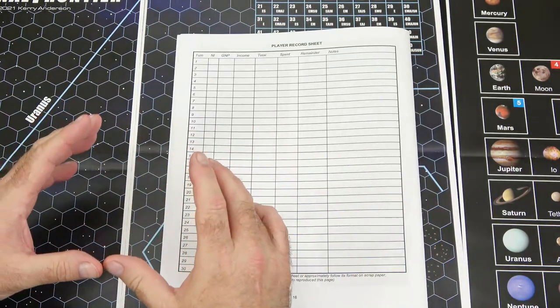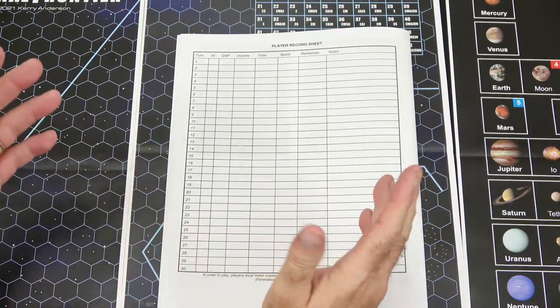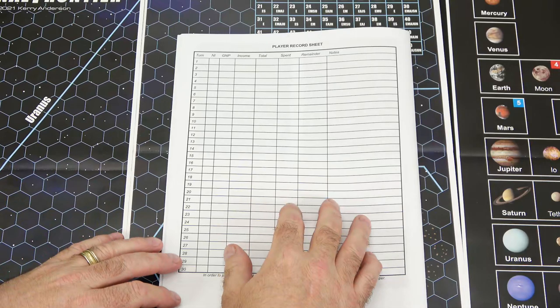And then you have the player record sheet, which if you remember looking at the other video, Final Frontier, I did before last year, it came with a pad here. You just have the one sheet and you just make as many copies as you need when you're playing the game.